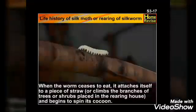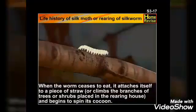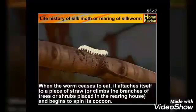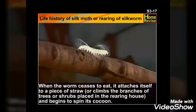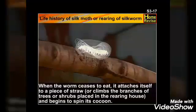During this period the silkworm sheds its skin — that is, it molts — four times. When the worm ceases to eat, it attaches itself to a piece of straw or climbs branches of trees or shrubs placed in the rearing house, and begins to spin its cocoon. And so the magic begins.